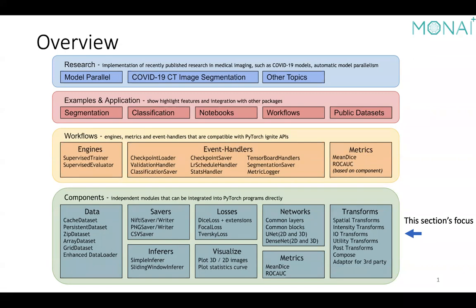These components can be very helpful for building your research prototypes. On top of that, we have workflow implementations based on PyTorch Ignite. When the general pipeline of your research prototype is ready, you may want to use these workflows to reduce the number of lines of Python code, so you can focus on novel research ideas and avoid boilerplate code such as constructing a training loop again and again. This also makes your research code more maintainable.